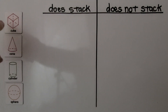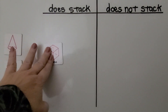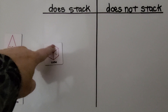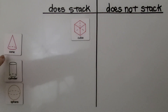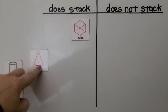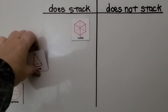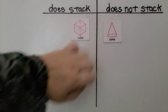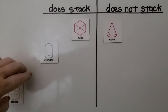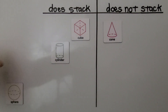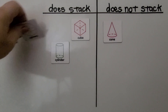So can this cube stack? Can we make a tower with cubes? It's got a flat surface on the top and the bottom. If you said yes, you're right — this does stack. What about this cone? Does it have a flat surface on the top and the bottom? It has a flat surface on the bottom, but it's got a point on the top. So no, that does not stack. What about this cylinder? It's got a flat surface on the top and the bottom, so yes, it does stack. And this sphere has no flat surfaces, so that does not stack.